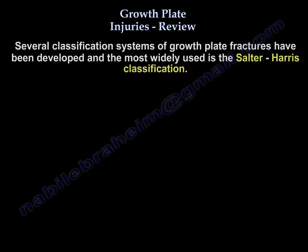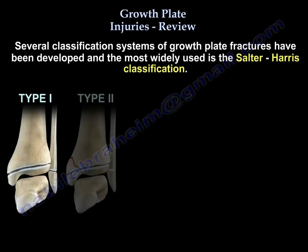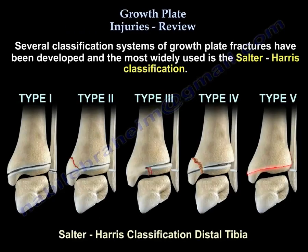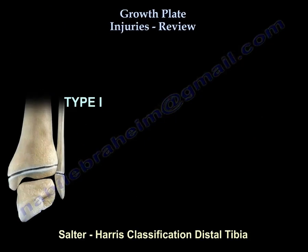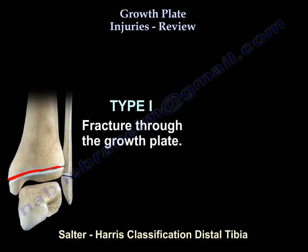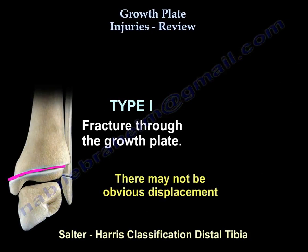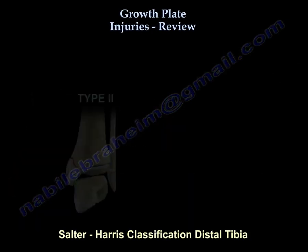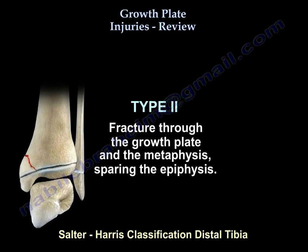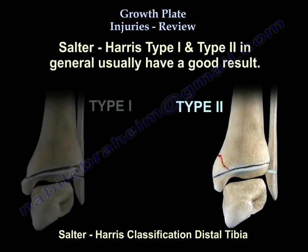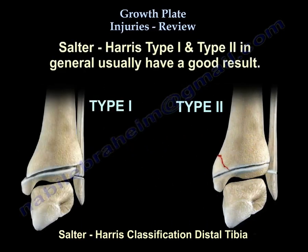We need to be familiar with the Salter-Harris classification of growth plate injuries. There are five types. Type 1 is a fracture through the growth plate; there may not be obvious displacement. Type 2 is a fracture through the growth plate and the metaphysis, sparing the epiphysis. Type 1 and type 2 usually have a good result.